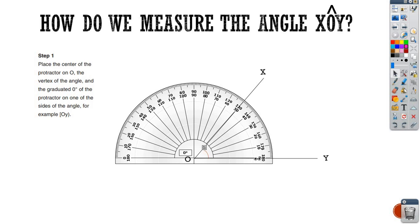And I start counting 0, 10, 20, 30, 40 to reach the other side, which is OX, on 50. Not on 130 because I start from the number 0, 10, 20, 30, 40, and 50. So the measure of this angle is 50 degree.